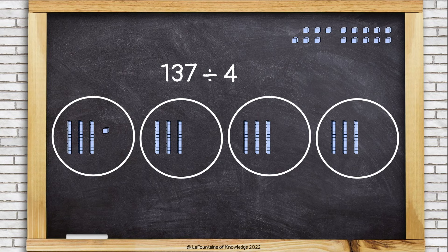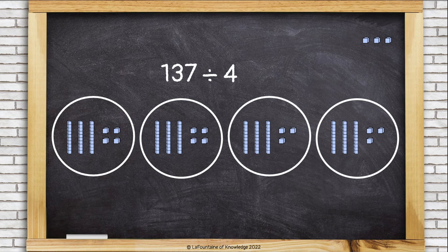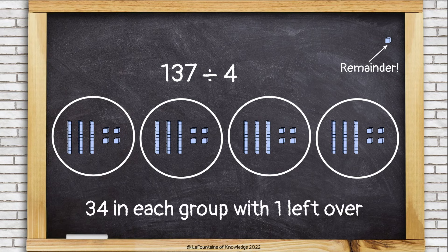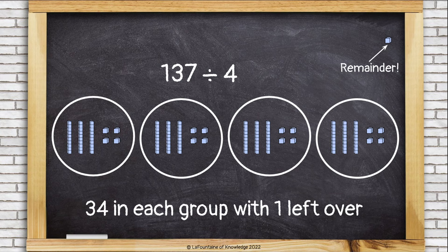Now let's divide up our ones. Okay, I have four ones in each group and one left over. That's going to be my remainder. So in each group I have 34 and then I have one left over. That leaves me with an answer of 34, remainder one.